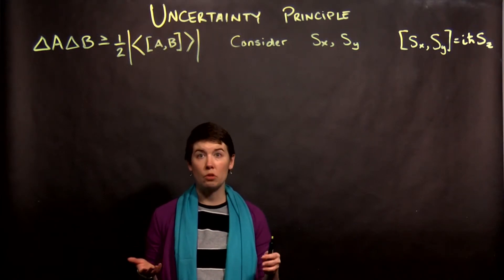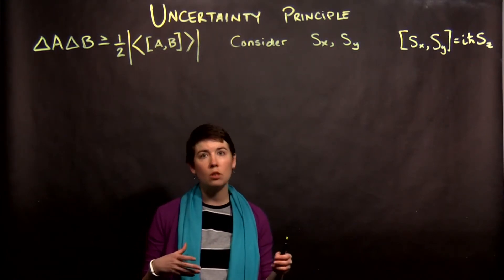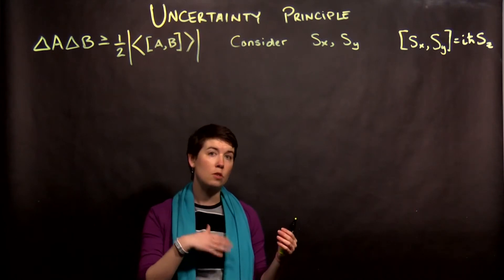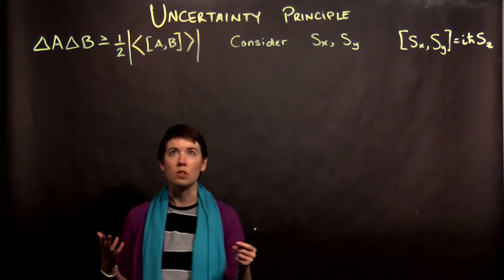I'm going to go through an example with the uncertainty principle where we specifically look at the operators of measuring spin in the x and y directions for a spin one-half system.